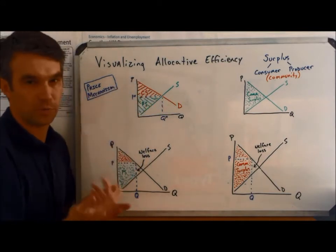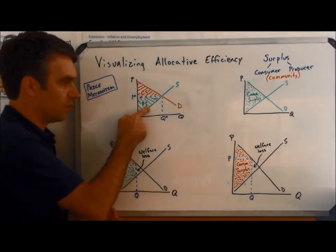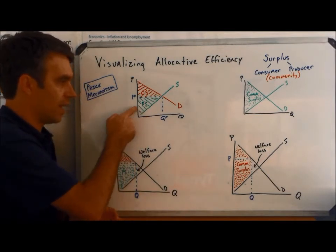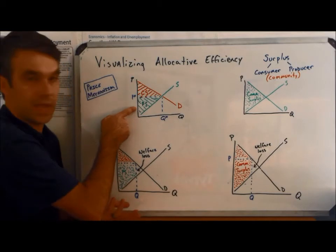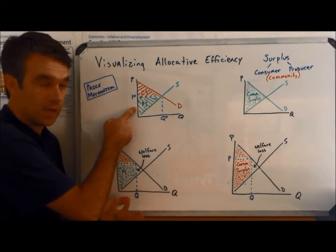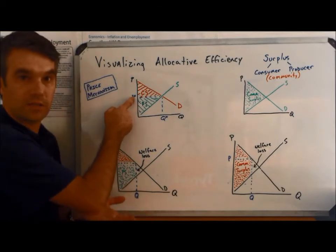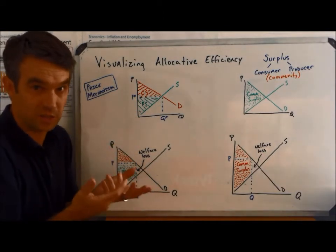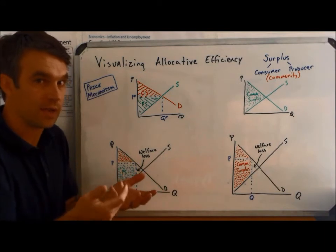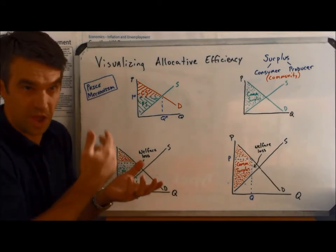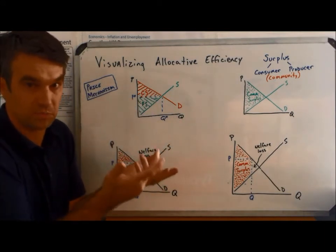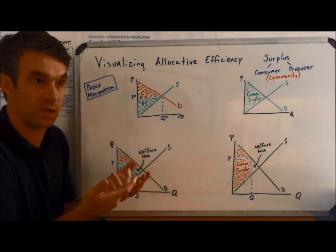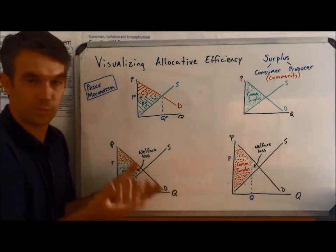The same is exactly true for producers. This producer would have been willing to produce this quantity at a low price of $8 or $9. Yet, they got to sell it at a higher price, whatever the market price was. So again, they have their satisfaction. They would have been happy at $8 or $9, but they also get an additional $5, $6, $7 in there too. So that's producer surplus.